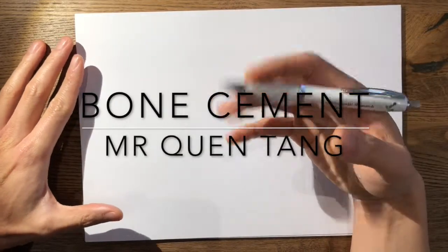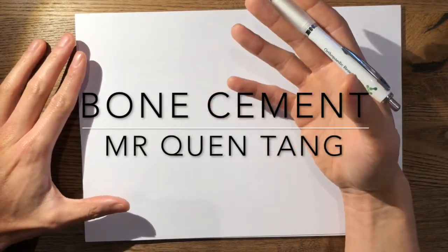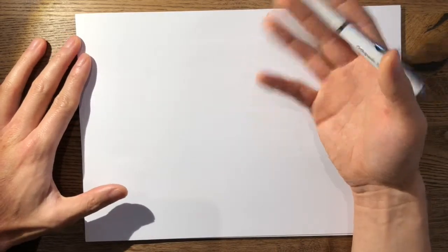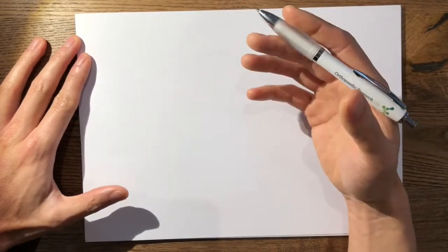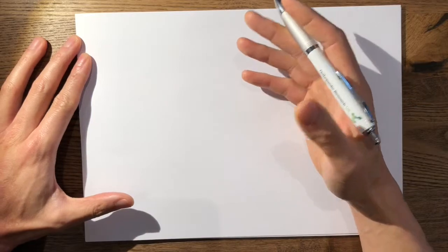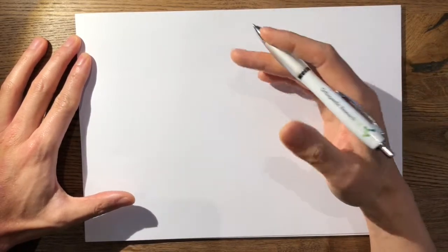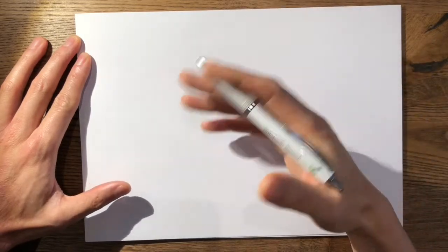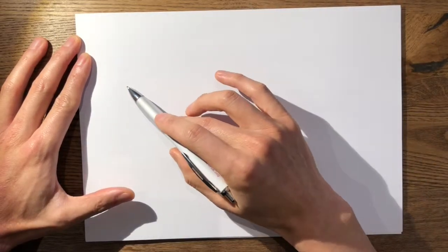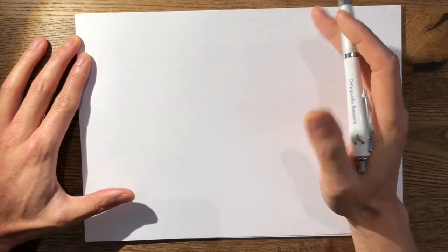Bone cement is typically one of the highest yield topics in the FRCS examination and is very commonly asked, particularly in the basic sciences viva. You should at the very least be able to talk about it for five minutes. When you talk about it, think of it in terms of its composition, its properties, and its uses.